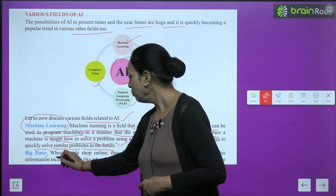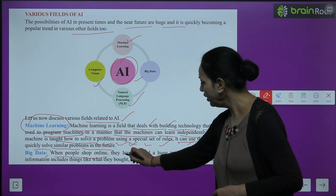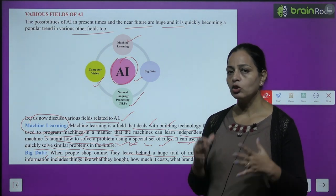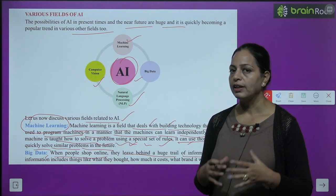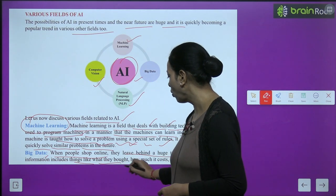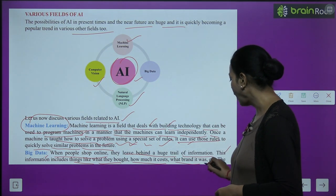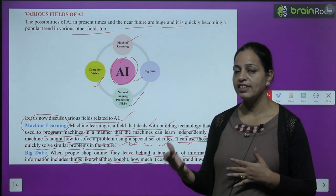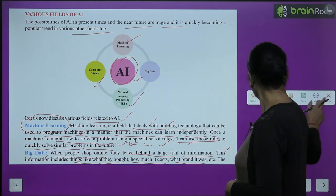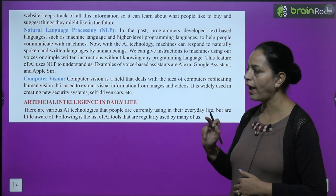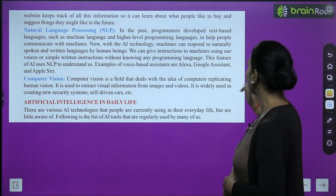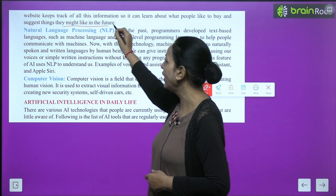Big Data. When people shop online, they leave behind a huge trail of information — things like what they bought, how much it cost, what brand it was, etc. The website keeps track of all this information so it can learn about what people like to buy and suggest things they might like in the future.